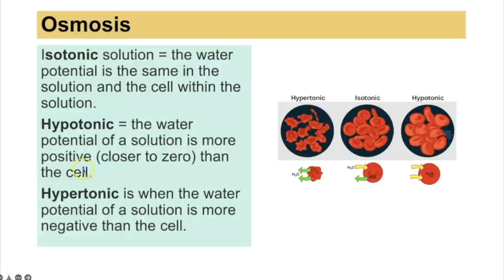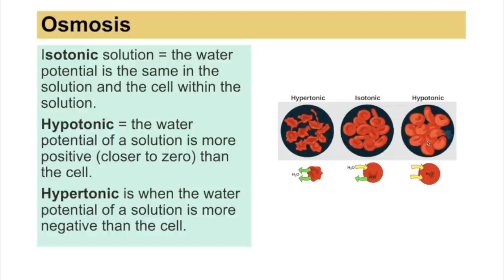Three key terms linked to osmosis: isotonic — water potential is the same inside and outside the cell; hypotonic — the solution has a more positive water potential (closer to zero) than the cell; hypertonic — the solution has a more negative water potential than the cell, meaning more solutes. In an animal cell: isotonic solution causes no net gain or loss of water; hypertonic solution causes water to leave by osmosis, causing cells to shrivel (crenate); hypotonic solution causes water to enter by osmosis, potentially causing the cell to burst.